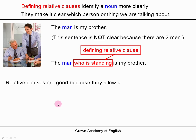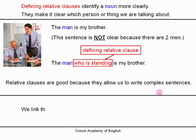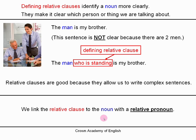Relative clauses are good because they allow us to write complex sentences. Complex sentences are longer sentences which have a dependent and an independent clause, and they are a much better style of English than simply short, simple sentences. We link the relative clause to the noun with a relative pronoun — in this sentence it is the word 'who'. It is a relative pronoun because it represents the noun 'man' and takes the place of that noun, linking it to the whole relative clause 'who is standing'.